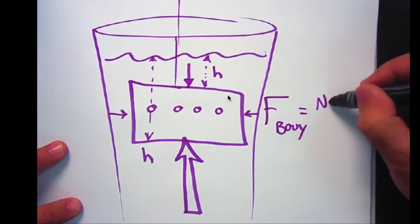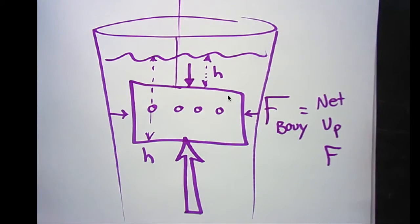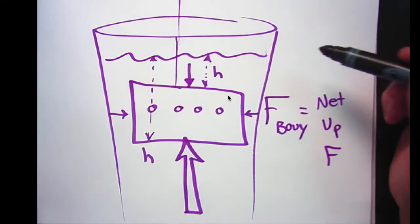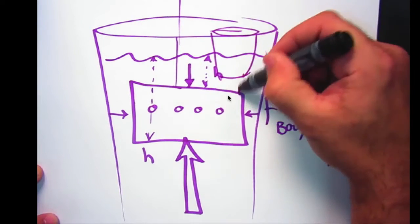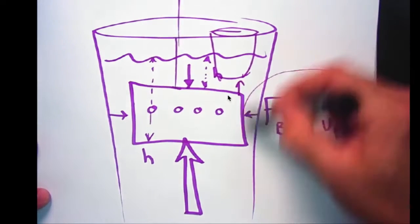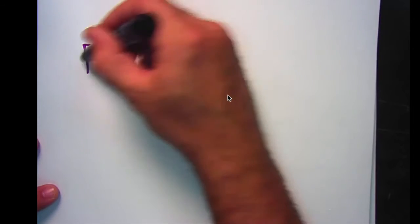It is the net upward force on the brick. Anything that gets submerged in a fluid, even if it's partially submerged, even if something up here was floating, it has a net upward force that is the buoyant force. This is also known as Archimedes' principle.